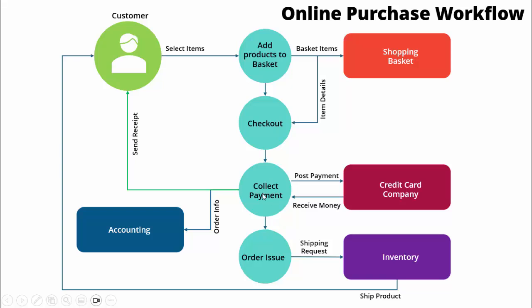Once checkout is done, the next step is payment collection. If paying through a credit card, that information goes to the credit card company — it's two-way communication. We send the information and get confirmation that payment is received. Then we prepare the order, send that to the inventory department which ships the product, and the payment info is logged into accounting and a receipt is sent to the customer. We can see how easily we've converted the steps into a useful data flow diagram.